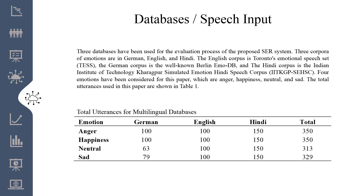In this paper, three different databases are used for the formulation of a multilingual database. The English corpus is the Toronto Emotional Speech Set, TESS. The German corpus is the well-known Berlin EMODB. The Hindi corpus is the Indian Institute of Technology Kharagpur Simulated Emotion Hindi Speech Corpus, IIT KGP. The table below shows the emotions considered — the four basic emotions: anger, happiness, neutral, and sad — and the total number of utterances taken from each database for each emotion.